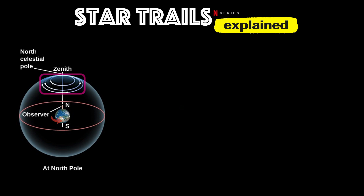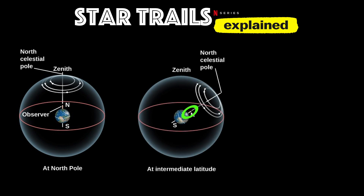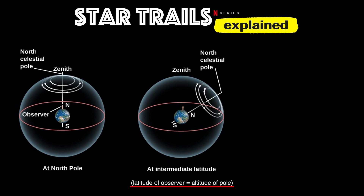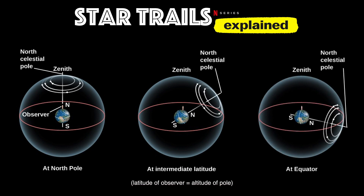In another scenario, if this observer should start traveling south towards the equator, they'll eventually find themselves in the intermediate latitudes, where the latitude of the observer is equal to the altitude of the north celestial pole in their sky. When this observer travels even further south and finally finds themselves directly at the equator, the north celestial pole will now appear on their distant horizon.